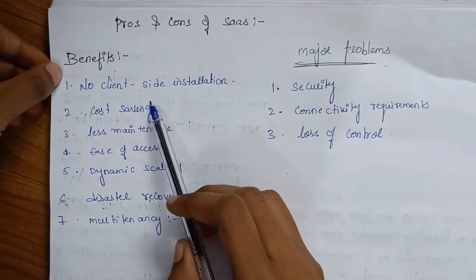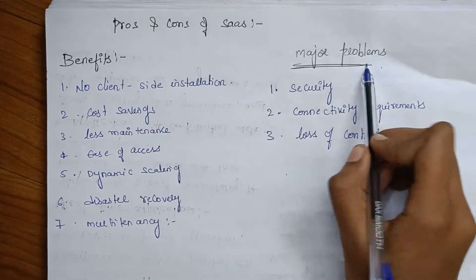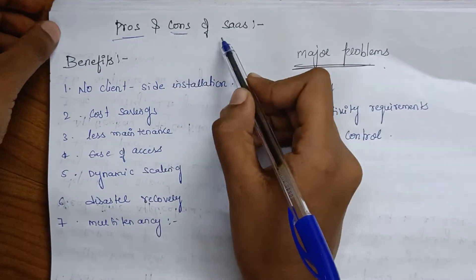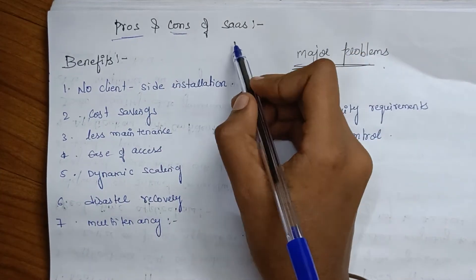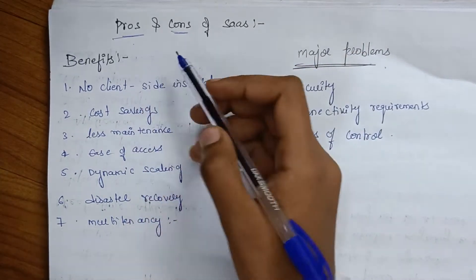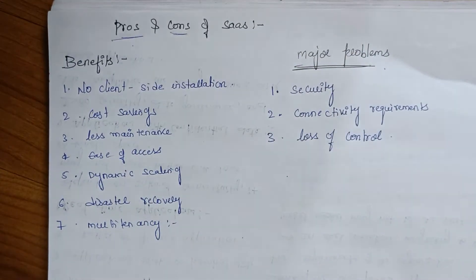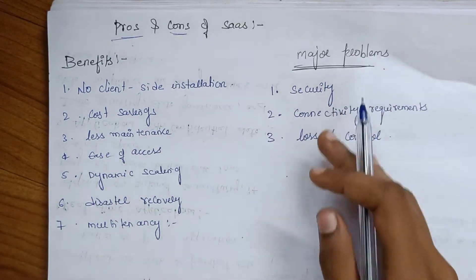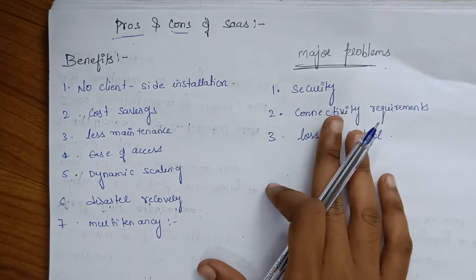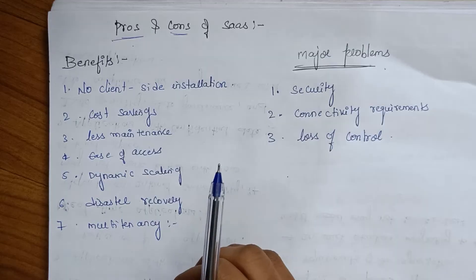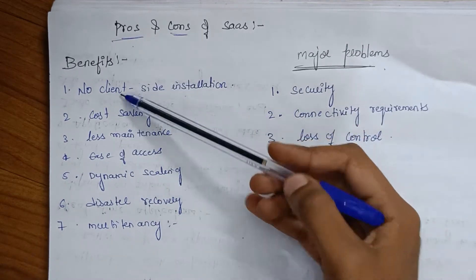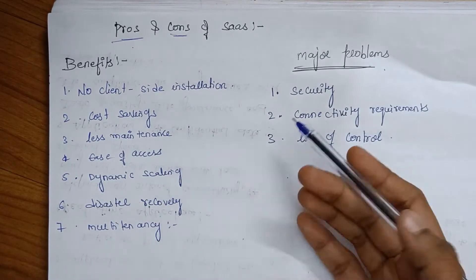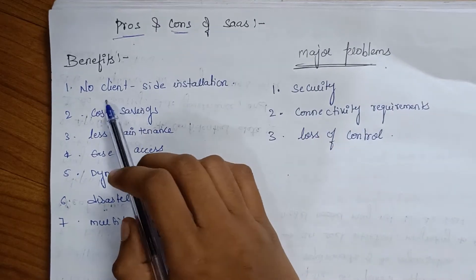So there are benefits and major problems — the pros and cons. There are problems and solutions, benefits and problems. This is the overall topic. You can provide side headings, elaborate, and write with your own words.